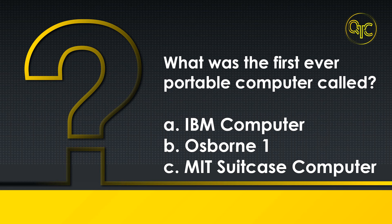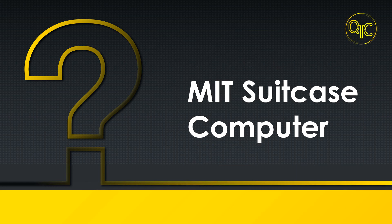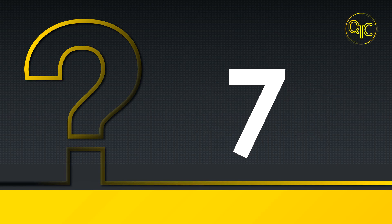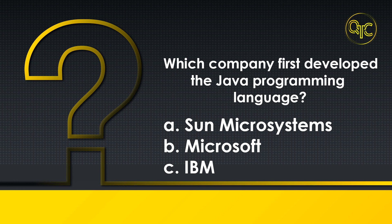Number six question: what was the first ever portable computer called? A) IBM computer, B) Osborne 1, C) MIT suitcase computer. The answer is MIT suitcase computer.